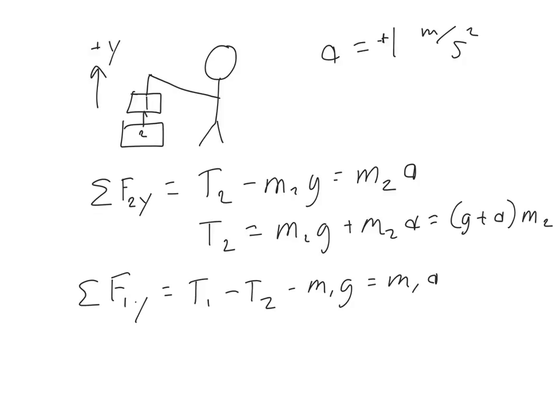So, again, let's just solve for T1 algebraically. And we see that would just be T2 plus g plus a times M1. And I could also then plug in what I had for T2 here. And what I will find is, I could do distributive property things and find g plus a times M1 plus M2.